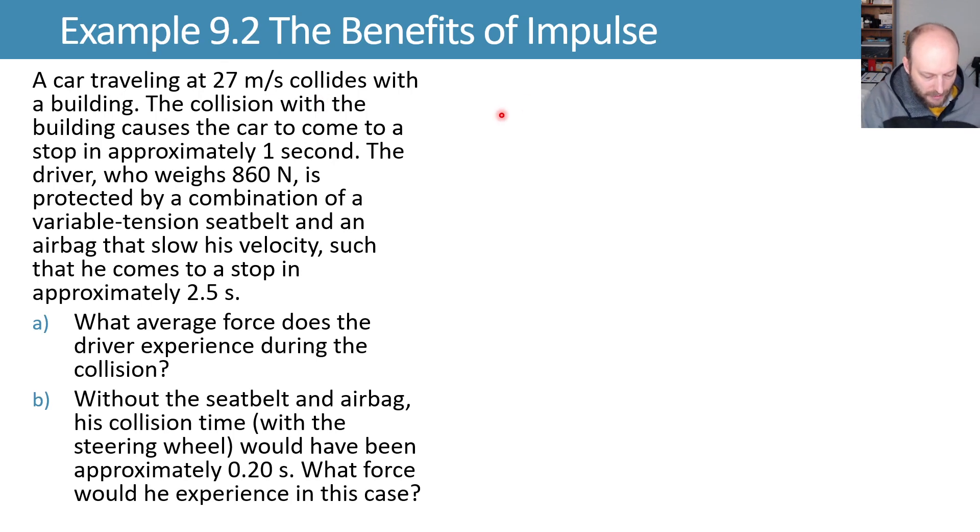We've got a car traveling at 27 meters per second, and I'm going to draw diagrams as we go here. So we've got a lovely car. It's traveling with some initial mass times velocity, and then we have a collision that causes it to come to a stop in approximately one second.